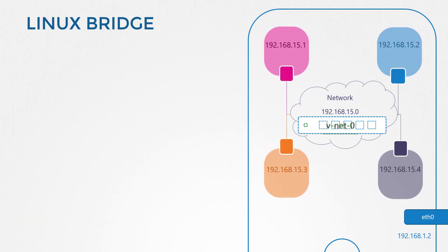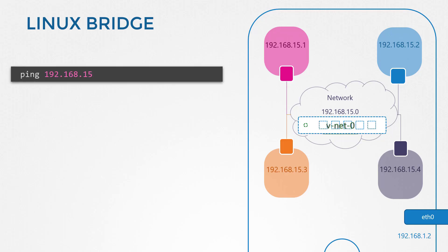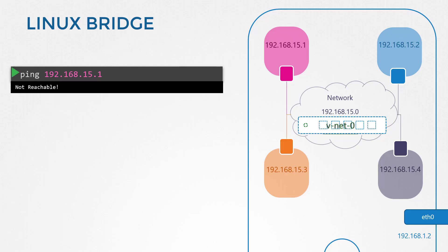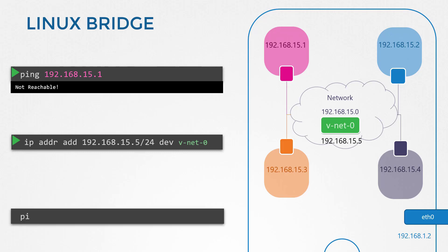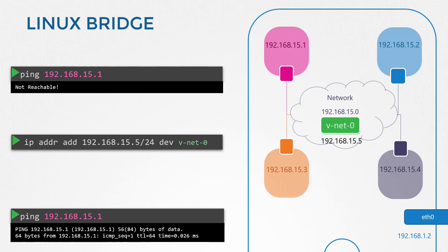Our host has the IP 192.168.1.2. If we try to reach one of the namespace interfaces from the host, it won't work — the host is on one network and the namespaces are on another. But the bridge switch is actually a network interface for the host, so we do have an interface on the 192.168.15 network. Since it's just another interface, we assign it an IP address. Run `ip addr` to set 192.168.15.5 to the bridge interface, and we can now ping the red namespace from the local host. However, this entire network is still private and restricted within the host.